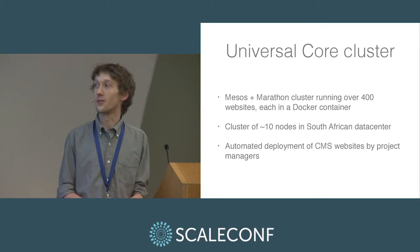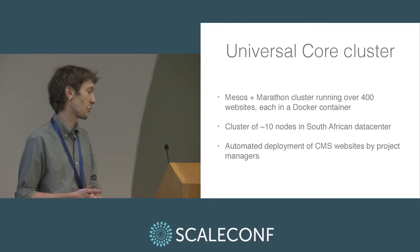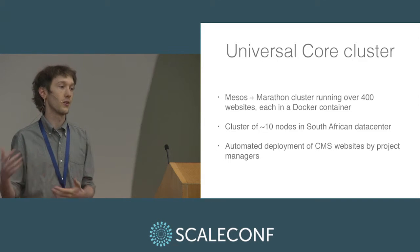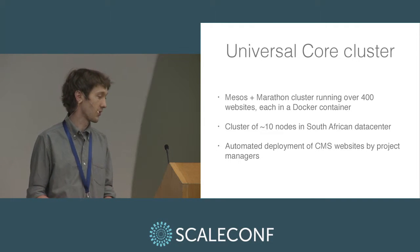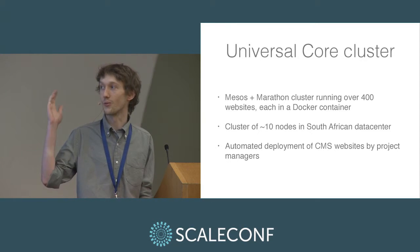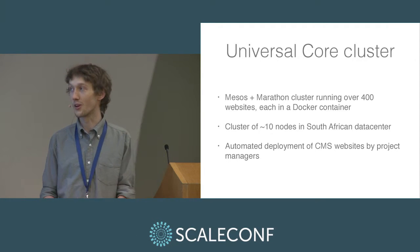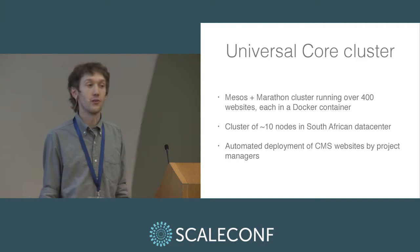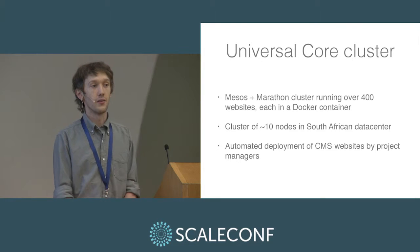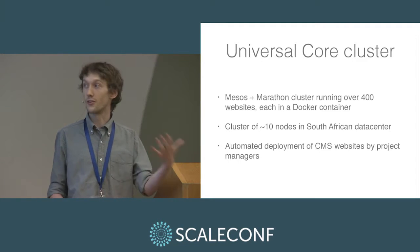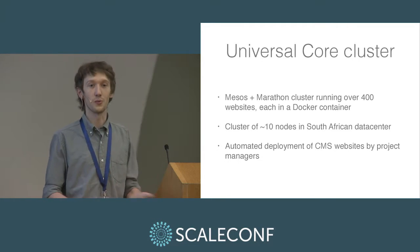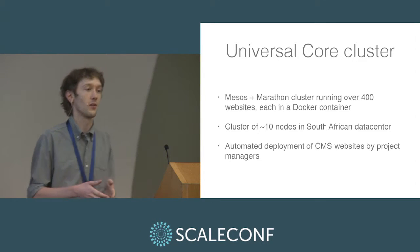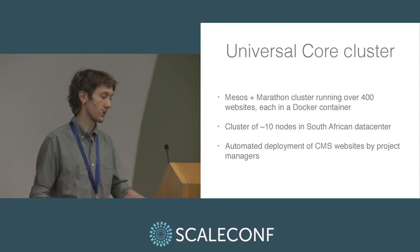What we built for this was basically a smallish Mesos and Marathon cluster, and we have each website running in a Docker container on this cluster. We're not really at Twitter scale or whatever — we're not running thousands of nodes. But we have 10 hosts in a South African data center, and we built a nice interface onto this with a lot of automation. We're at the point where product managers within our company can actually launch websites very quickly and easily.